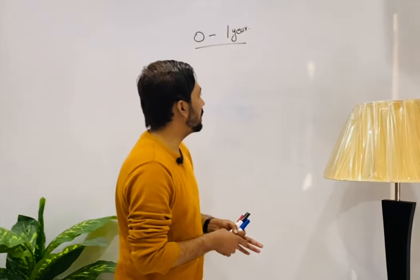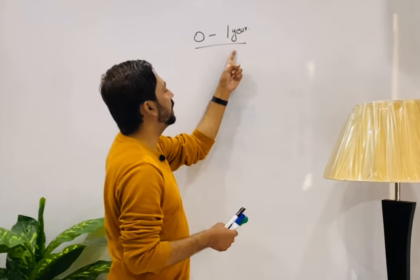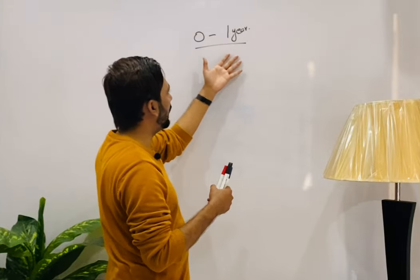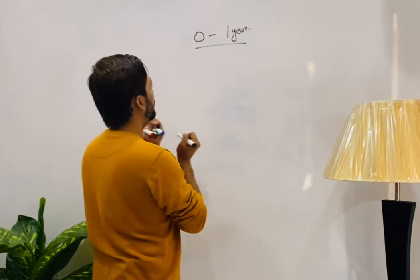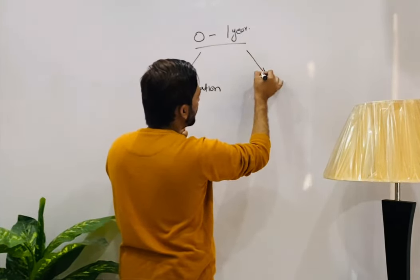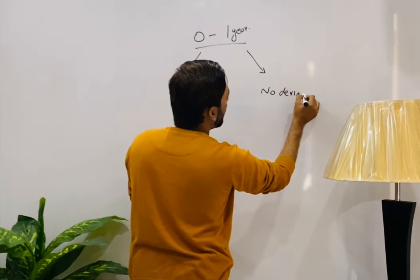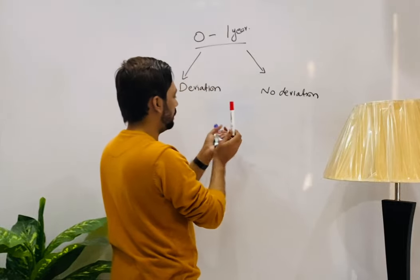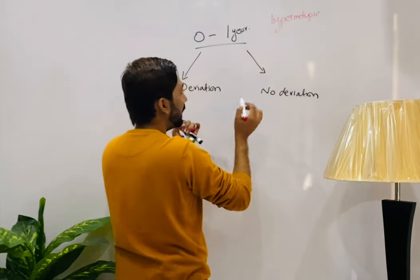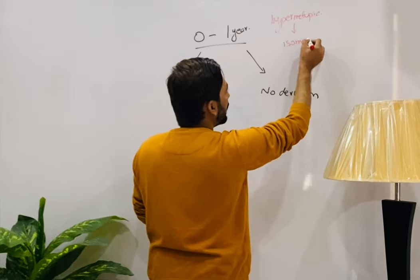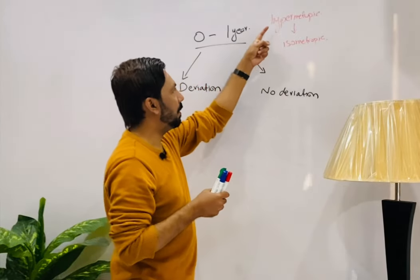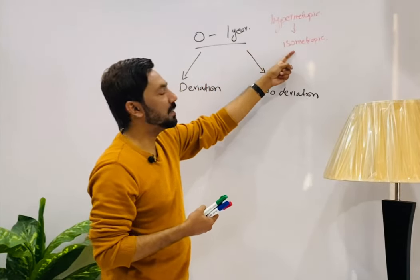Now let's discuss the effects of hypermetropia in different age groups. First, for the infancy age group — newly born to one year. If we have isometropic hypermetropia, meaning the refraction is the same in both eyes — iso means same — we consider two cases: patient with deviation, and patient with no deviation.